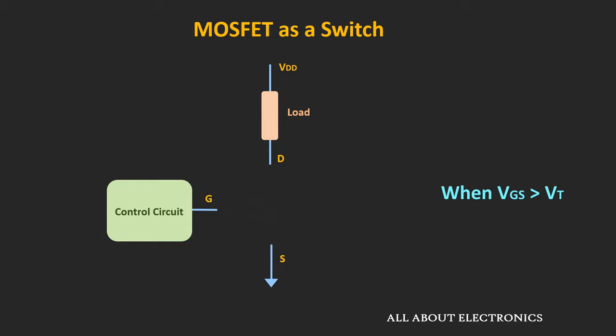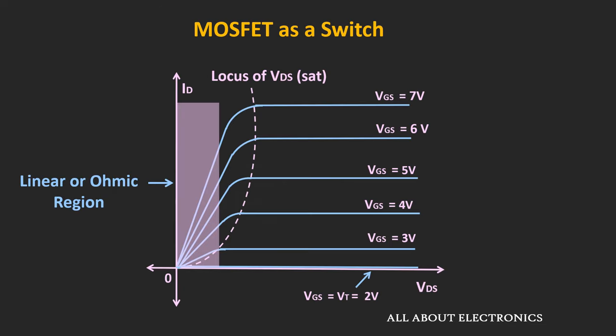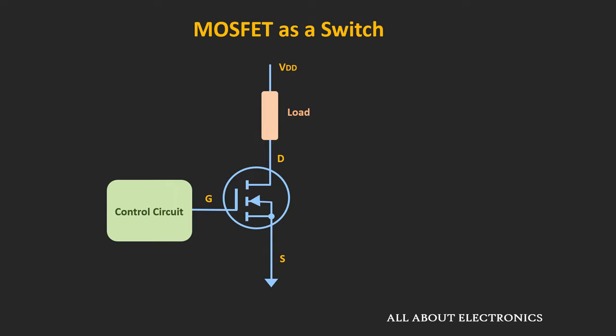Whenever the control input is more than the threshold voltage, the MOSFET will act as a closed switch and current starts flowing through the load. Whenever the threshold voltage of the MOSFET is less than 2 to 3V, this type of MOSFET can also be operated using microcontrollers. When the MOSFET is in the ON condition, it should operate in the linear region — by properly selecting the supply voltage for the given load, we can ensure it operates in the linear region.